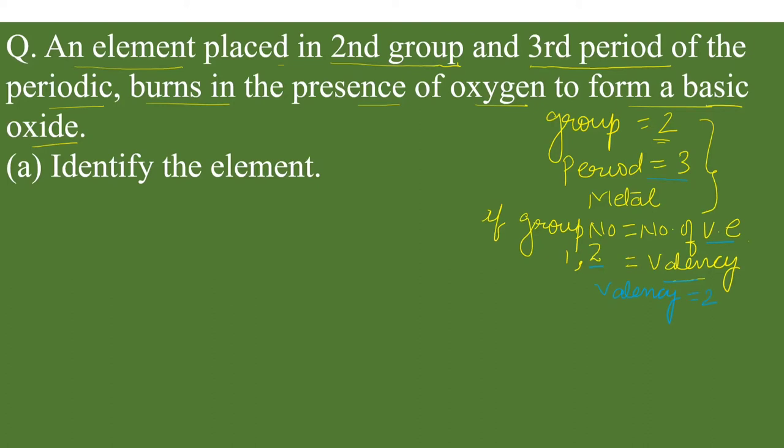Now second is period number. Period number children, it tells about the number of shells. Period number is equal to number of shells. If period number is 3, it means this element has 3 shells. And 3 shells means K, L, M, clear.